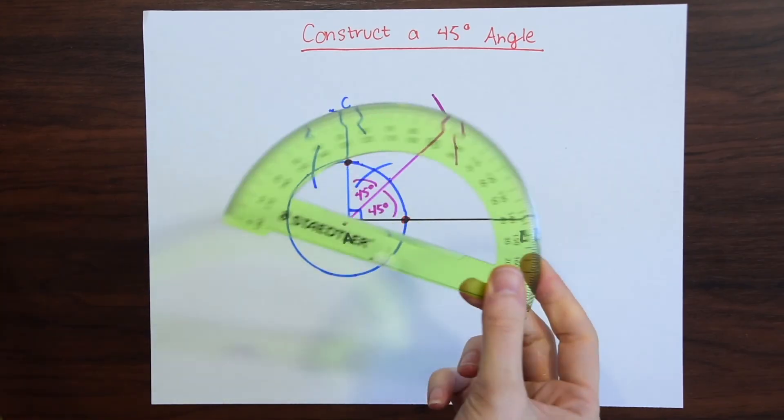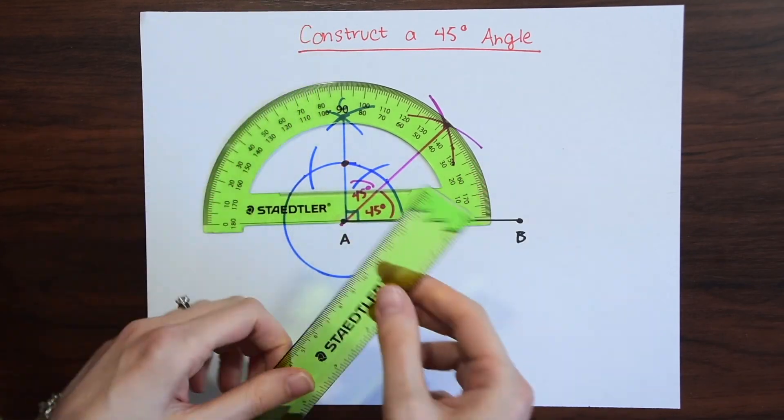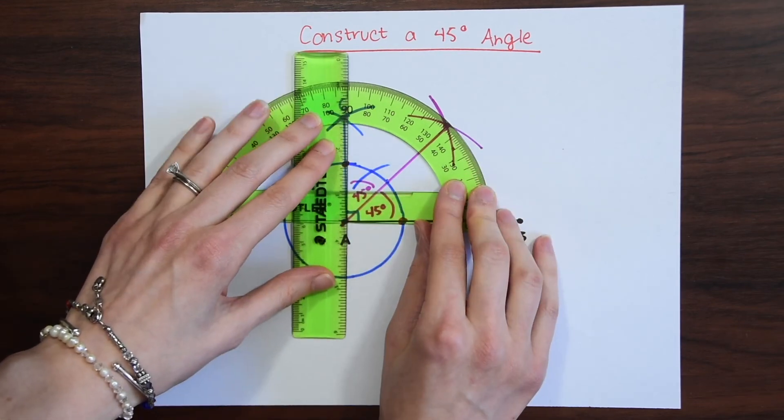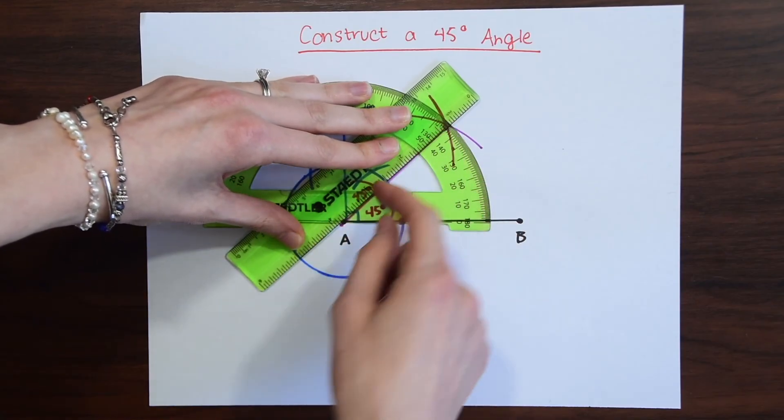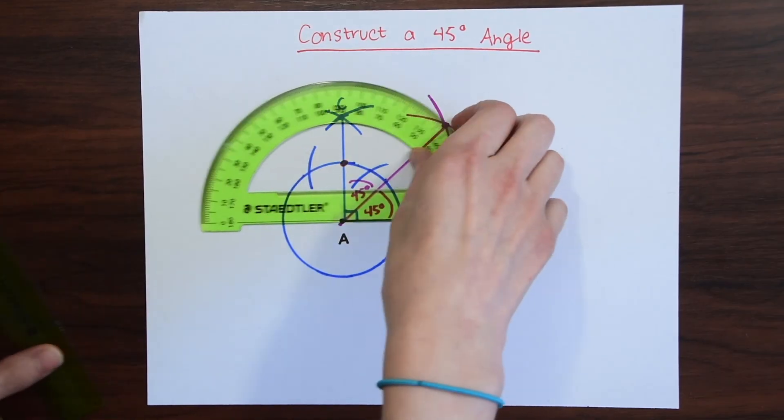You can even test it out using a protractor. If we line this up, see that our blue line lines up with 90 degrees, and if we check our pink line and take our ruler along that line in the middle, we'll see that it also lines up with 45 degrees. So we know that we did this right.